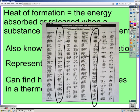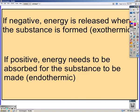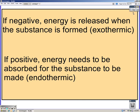We won't be using the Delta G or Delta S. If negative, that energy is released when that substance is formed, or exothermic. If it's positive, that energy needs to be absorbed for that substance to be made, so it's endothermic. Negative Delta H is exo, positive Delta H is endo.